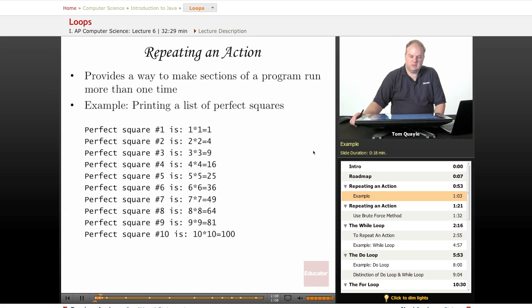In math, a perfect square is the result of multiplying an integer times itself. So the first perfect square would be 1 times 1 equals 1. The second one is 2 times 2 equals 4, etc.